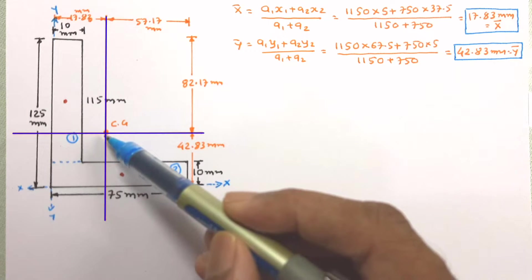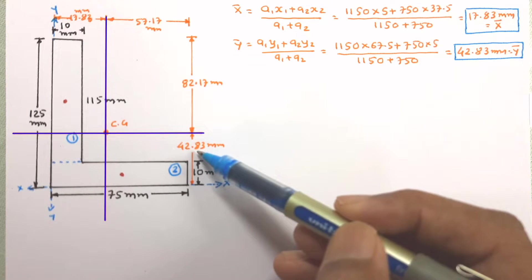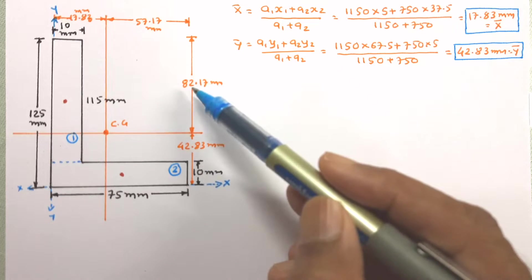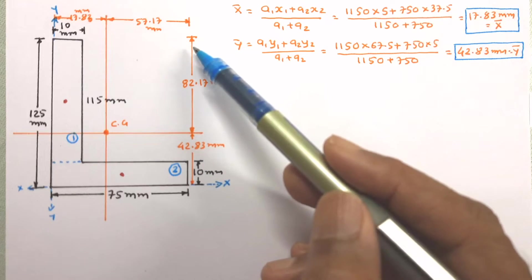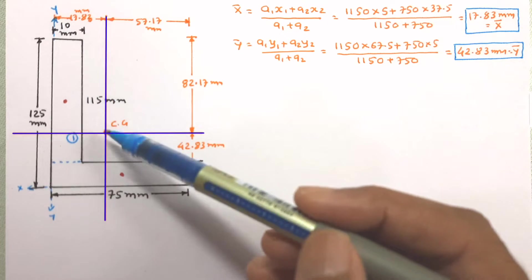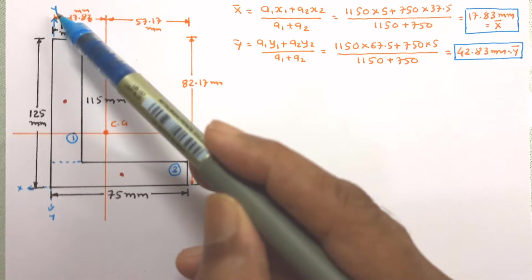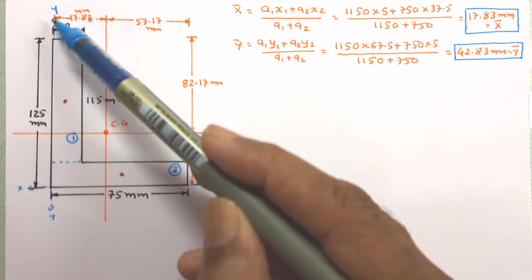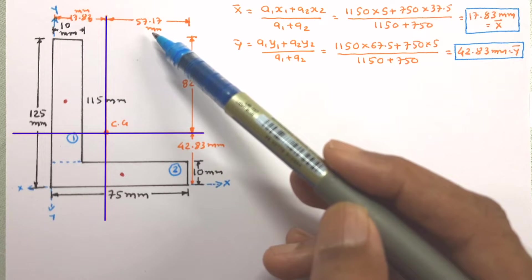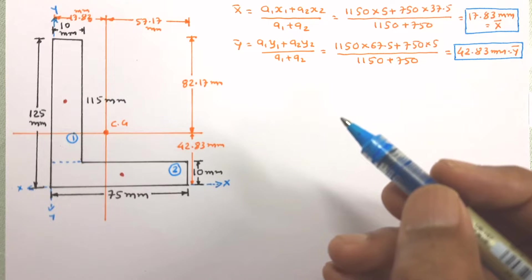The centroid of the figure is marked at 42.83 mm from the base and 82.17 mm from the top. It is also 17.83 mm from the YY axis with the remaining distance being 57.17 mm.